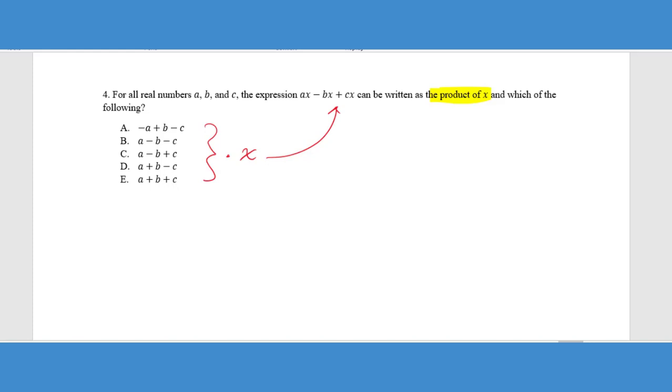Well, the way we do that is we undistribute, or a vocabulary term that you should have learned is called factoring. In this case, we want to factor out the common monomial. So factoring is a way of simplifying expressions. Instead of combining them together, we're breaking them down into their smaller parts. And so this is a way of reversing the distributive process.